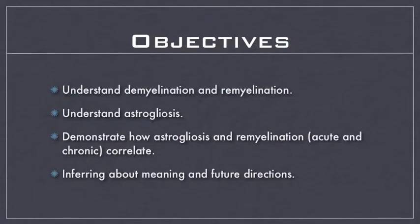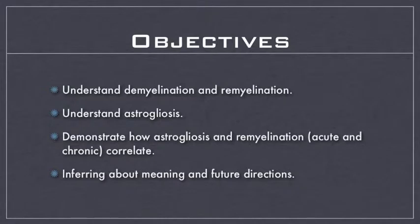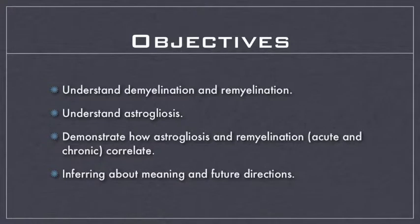I've laid out four prime goals for our time together. First, I want you to be able to understand what exactly demyelination and remyelination are, as well as what astrogliosis is. I want to make sure you understand both of these ideas in terms of not only theory, but also how quantitatively they can be measured. I will also demonstrate how astrogliosis and remyelination correlate to each other through pictures, data tables, and graphs. Then I will cap this all off with trying to lay out what all this exactly means in the bigger picture of neuroscience.